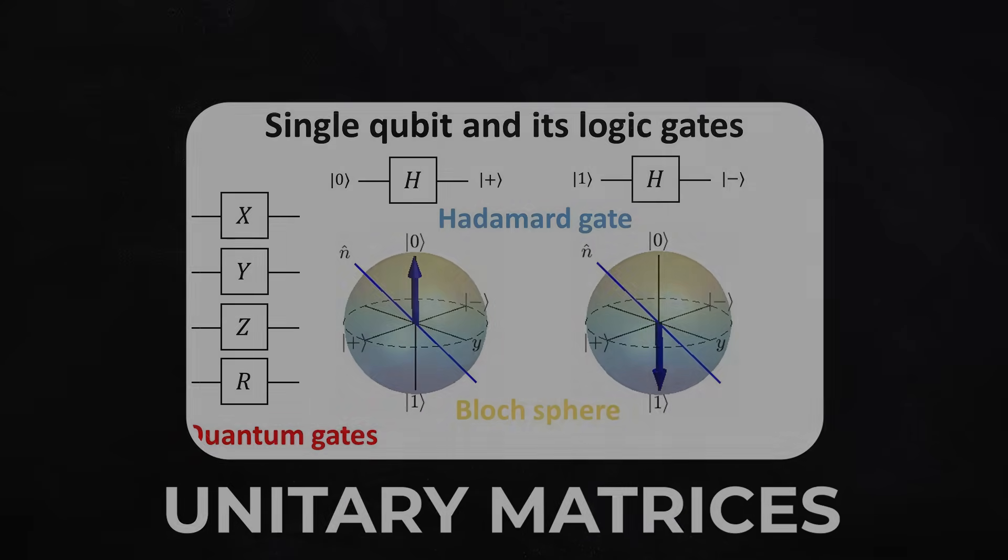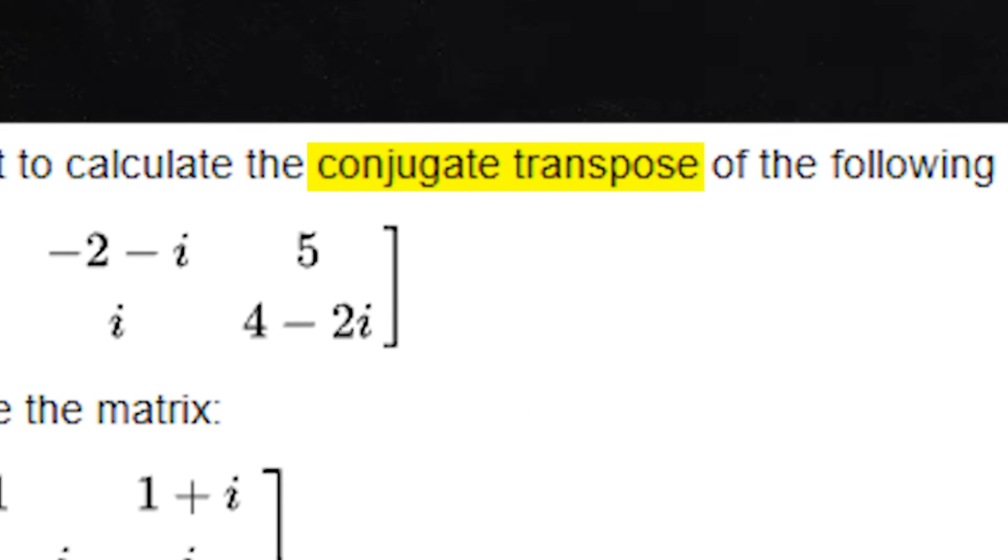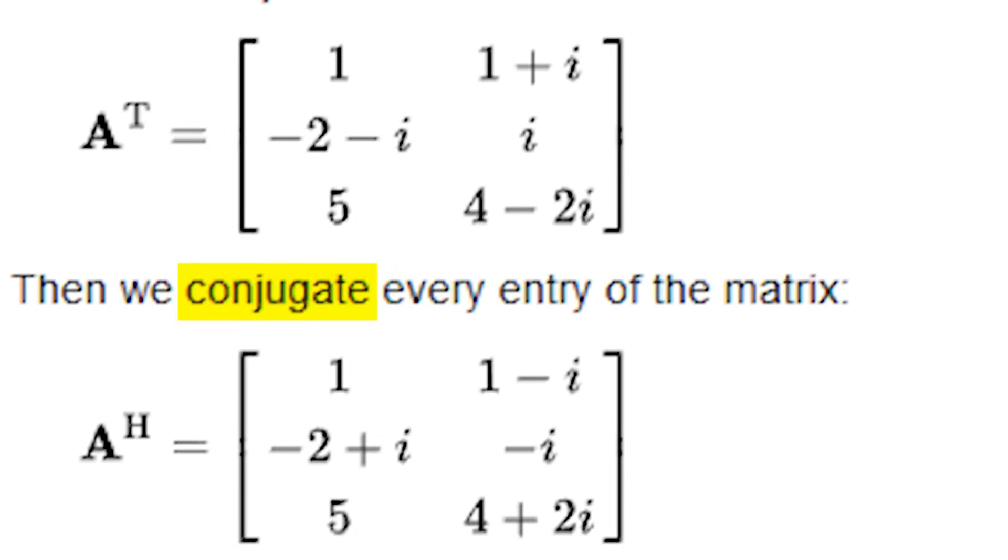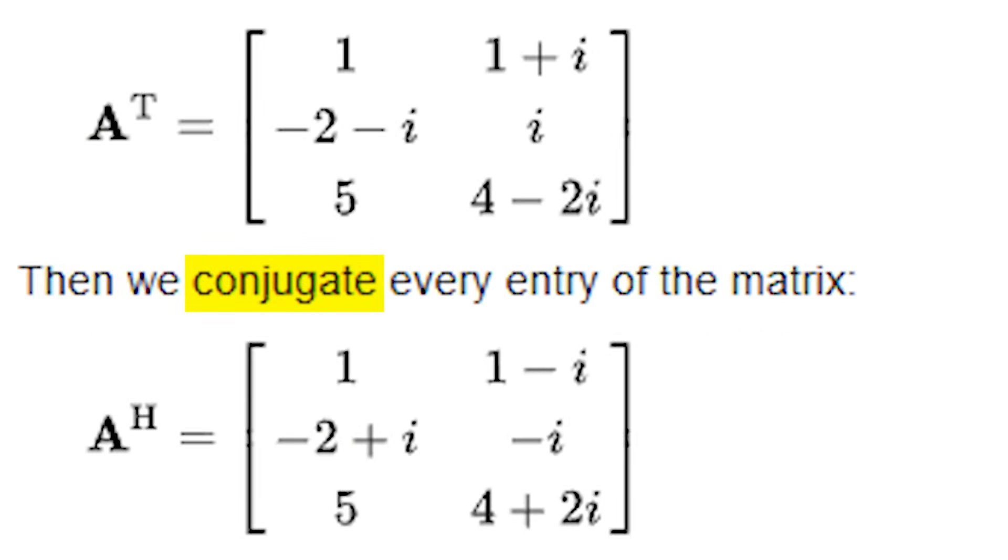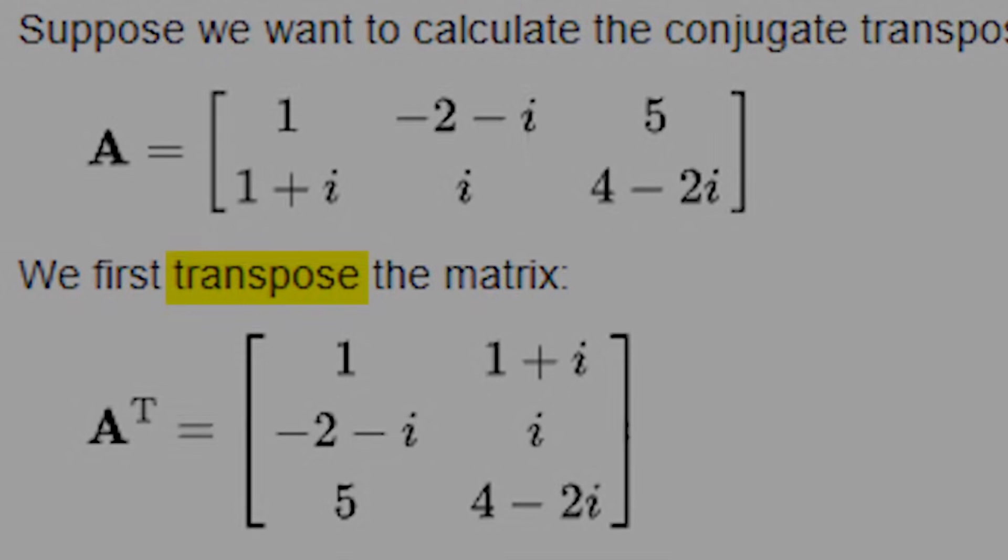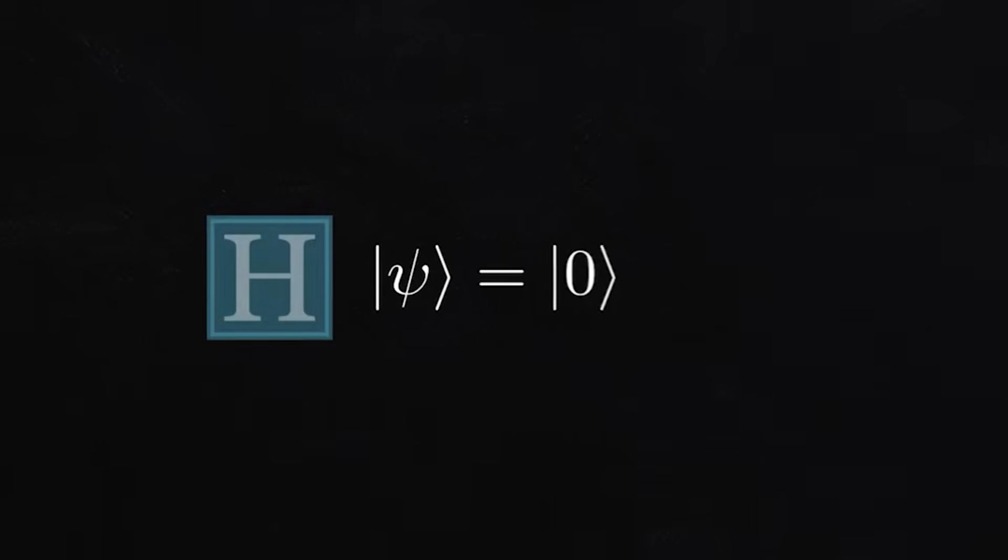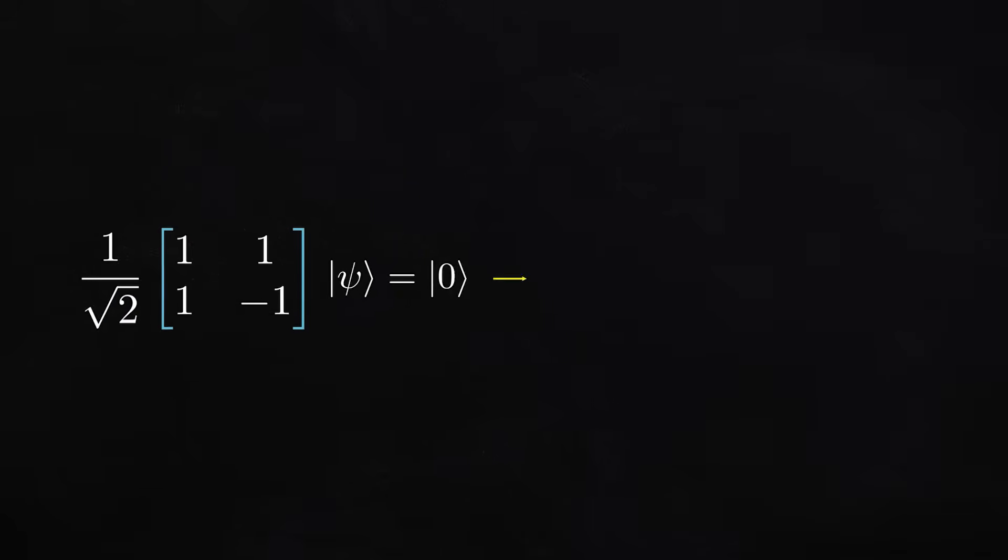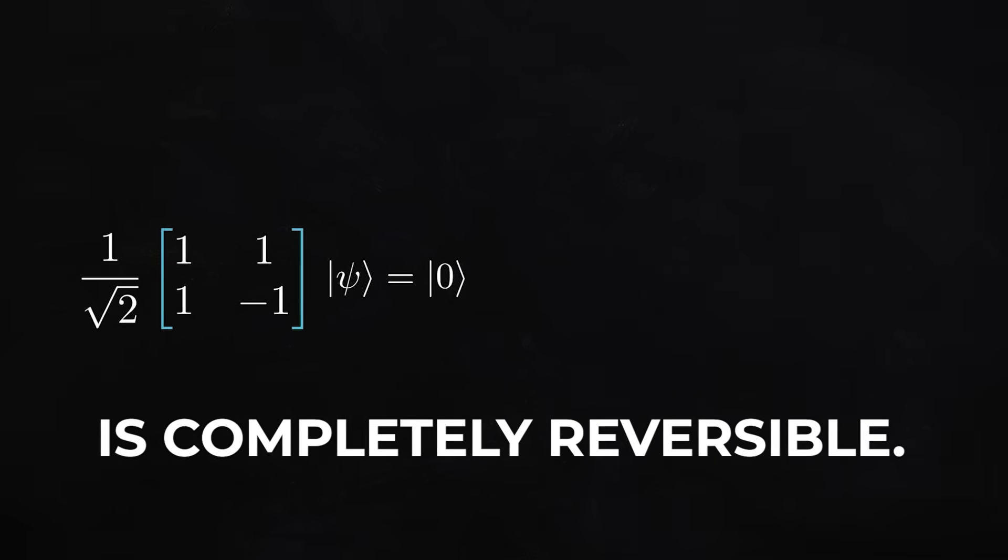Unitary matrices, among other properties, have the special property that their conjugate transpose is equal to their inverse. The conjugate here means flip the sign of any components of the matrix that have imaginary numbers. The transpose means flip the matrix along its diagonal. The fact that quantum operations are unitary has some interesting implications in quantum computing, including that every quantum computation is completely reversible.